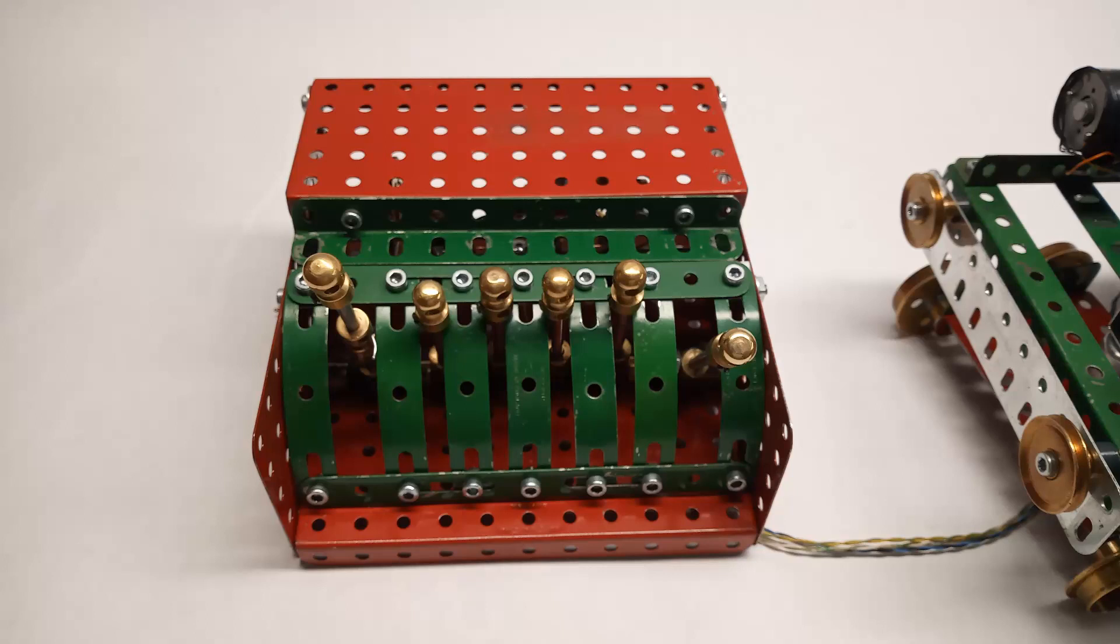From left to right the levers are a throttle which unfortunately no longer works as I somehow managed to blow up the electronic module. Then there are the four levers that engage the four motors and on the right there is the reverser. Forward at the top, off in the middle and reverse at the bottom.